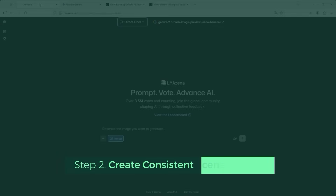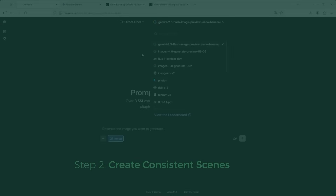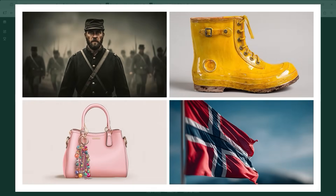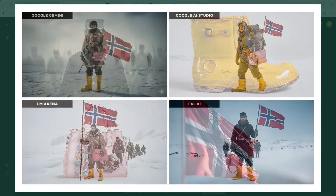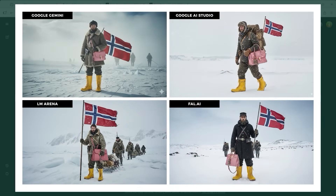Next I wanted to see if Nano Banana can handle objects just as well. So I picked four: 1) an infantry soldier from the American Civil War; 2) a single bright yellow rubber boot; 3) a pink handbag; and 4) a Norwegian flag. The prompt was: combine the four reference images to create a single coherent scene depicting a moment from a Norwegian Antarctic expedition in 1911. The man wears the yellow boots and carries both the Norwegian flag and the pink bag. And that's exactly what came out. I used four different platforms to generate the image via Nano Banana — I'll explain more about that later.